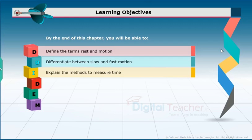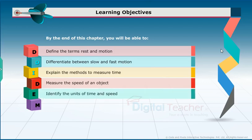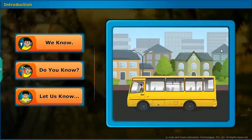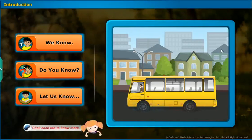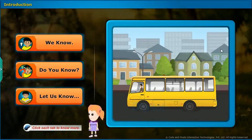Explain the methods to measure time, measure the speed of an object, identify the units of time and speed, and compare the speed of two objects. Introduction: Before entering into the chapter, follow the instructions shown on the screen. Click each tab to know more.